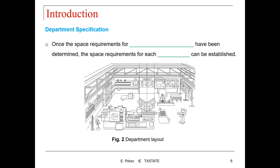The department specification builds on top of the individual workstation space. After you have defined the requirements for each individual workstation for a particular area, we then have to define the space for each department. Once the space requirements for individual workstations are determined, the space requirements for each department can be established.